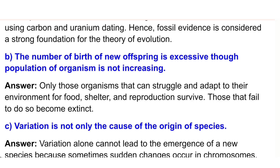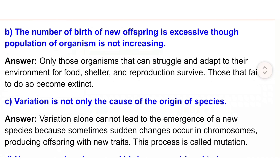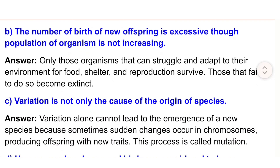Answer: Only those organisms that can struggle and adapt to their environment for food, shelter, and reproduction survive. Those that fail to do so become extinct. Variation is not only the cause of the origin of species.